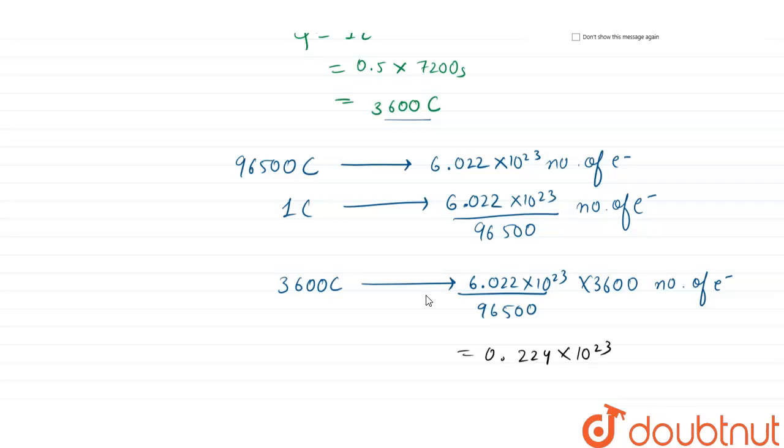Or it can be written as 2.24 times 10 to the power 22 electrons. So the number of electrons that are flowing through the wire is 2.24 times 10 to the power 22 electrons.